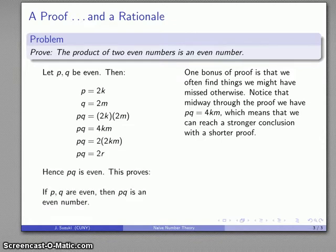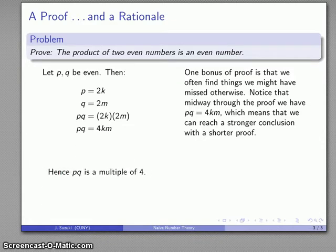At the same time, it's always worth noting that you've done all this work, you might as well take advantage of it and note that even though we proved the product of two even numbers is an even number, what we actually learned is that the product is a multiple of 4.